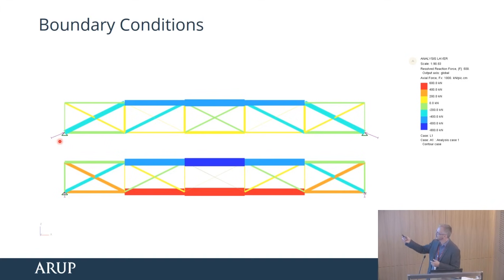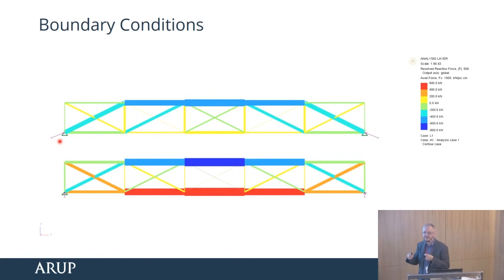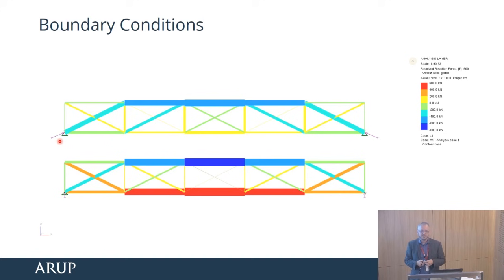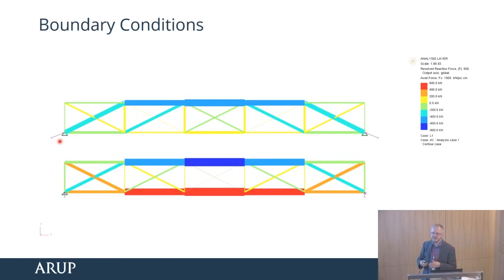If you do want to have fixed supports at the ends, you can't use an infinitely stiff support. Infinite stiffness is not possible. You need to work out some sort of spring stiffness, so the real results will be somewhere between the two. Bridge engineers stick a bearing under one end to make sure they never experience these problems.